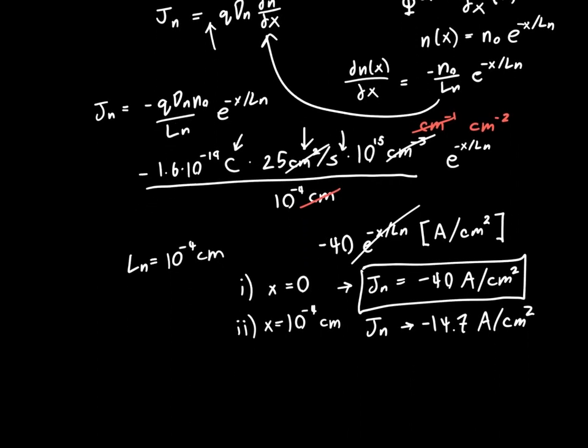Now we're almost done. The third one was x equals infinity, or if we're being pedantic, the limit as x approaches infinity. Well, if we just plug infinity in here, then this whole expression is going to go to 0, because it's e to the minus infinity, which is 0. And so we'll get that Jn is equal to 0.